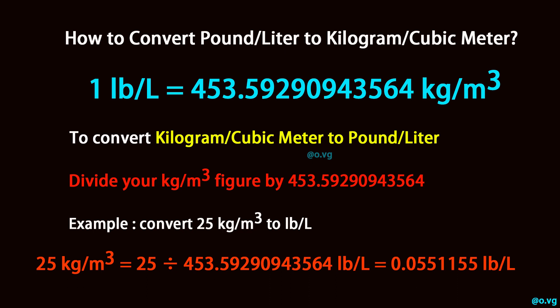To convert kilogram per cubic meter to pound per liter, divide your kilogram per cubic meter figure by 453.59290943564.